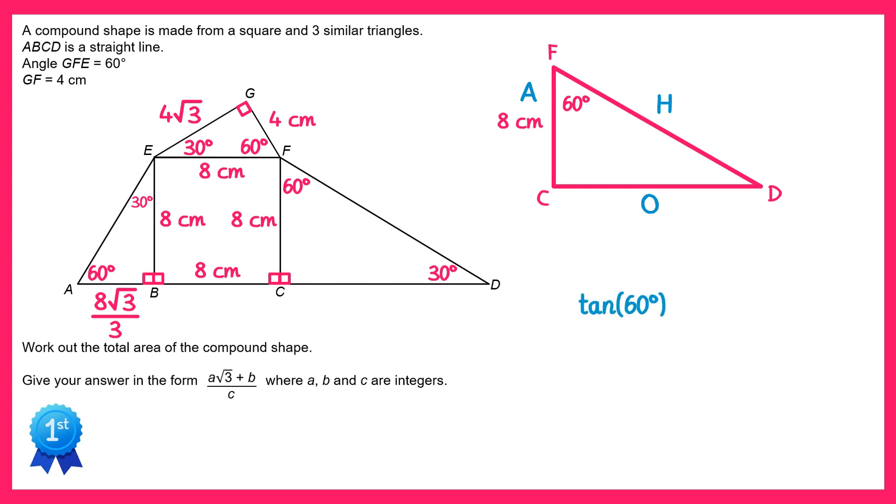So tan of 60 equals the opposite which we don't know, divided by the adjacent which is 8. The value of tan 60 is square root 3, so the opposite is just square root 3 multiplied by 8, which is 8 root 3. So let's add this to our diagram as well.